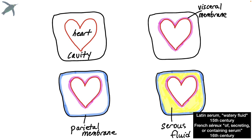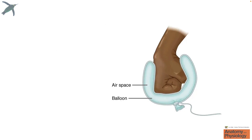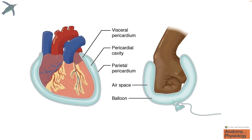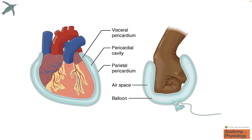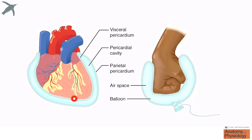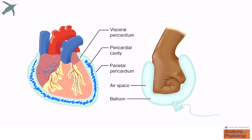The serous fluid protects the heart from rubbing up against the sides of the cavity every time it beats. Open Stacks has a great analogy here — it's like if you were to take your fist into an air-filled balloon. Now of course we're looking at the anatomical heart. You can see the visceral pericardium lining the heart itself, the parietal pericardium lining the cavity the heart sits in, and the pericardial cavity which contains serous fluid to prevent any rubbing or friction.